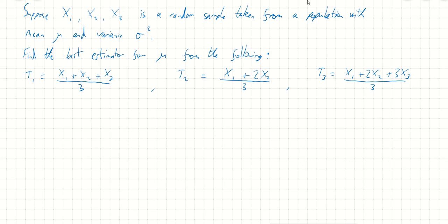We've got three estimators listed. T1, which is x1 plus x2 plus x3 over 3. T2, which is x1 plus 2x2 over 3. And finally, T3, which is x1 plus 2x2 plus 3x3 all over 3.